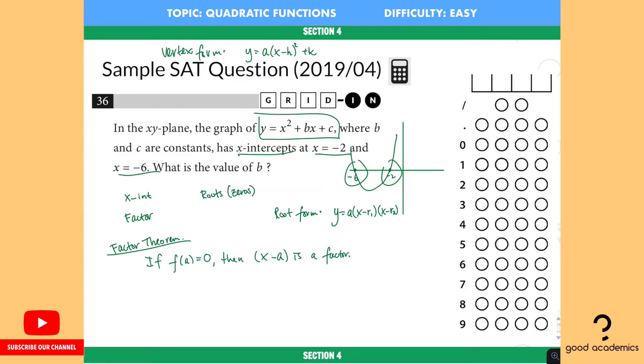So we have r1 is equal to negative 2. We have r2 is equal to negative 6. And we're going to put these two values into the root form. But there's one more thing we need to figure out, which is, what is the value of a?